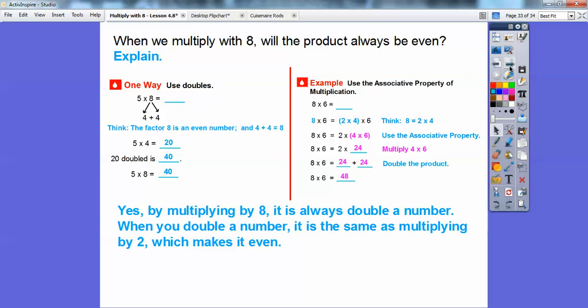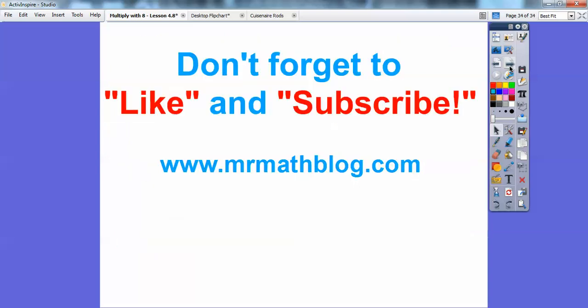Whenever you double a number, that means you're multiplying by 2. Anything times two always gives us an even number. So those are a couple strategies for multiplying by eight, and I hope that helps you guys. Take care.